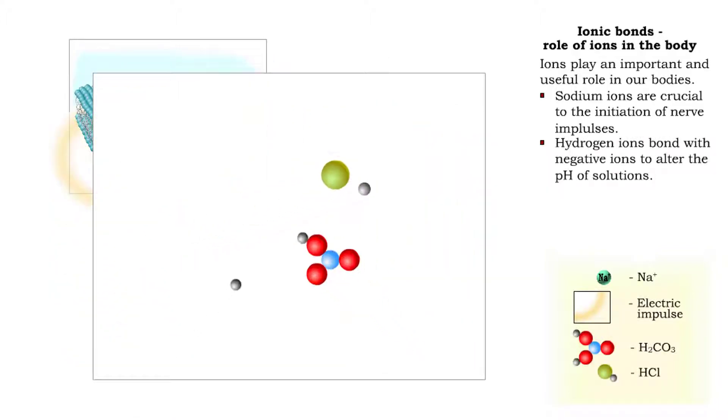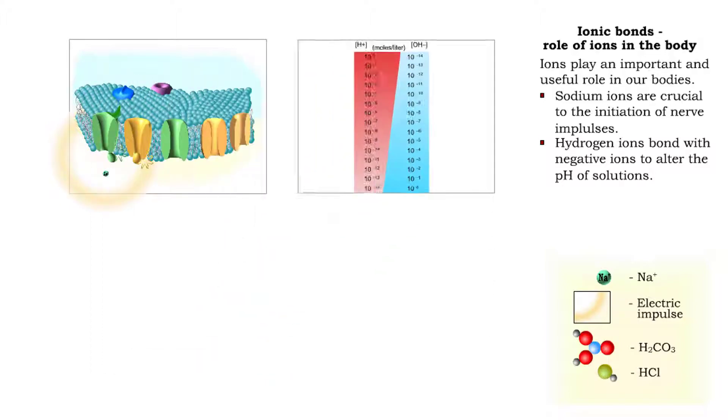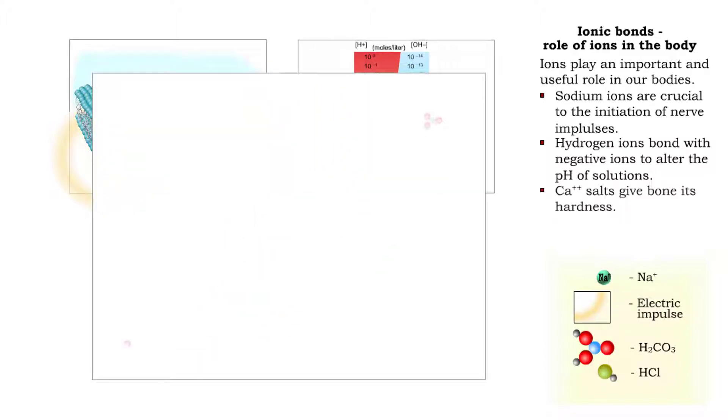The acidity of body fluids is regulated in part by the bonding of hydrogen ions with different types of negatively charged ions. Bone gets its hardness and strength from the reaction of calcium, phosphate, and carbonate ions.